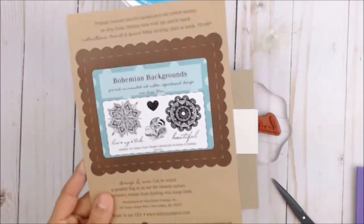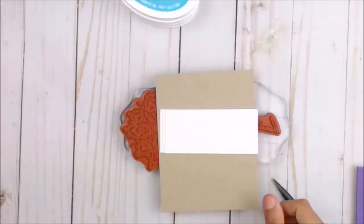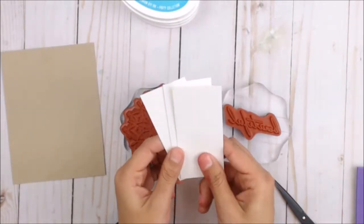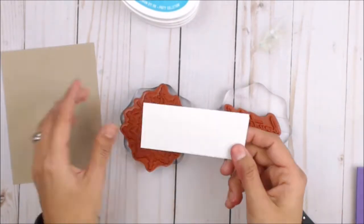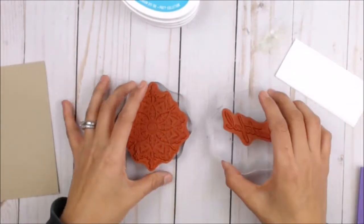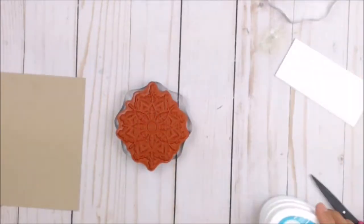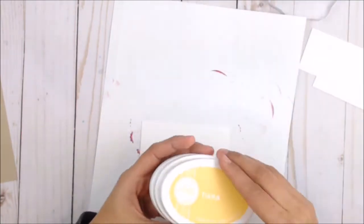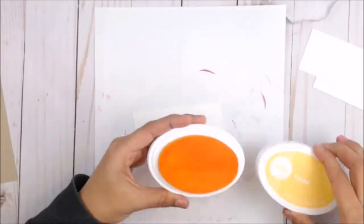To begin, I'm going to be using the Bohemian Background stamp set, Crumb Cake cardstock, three pieces of white cardstock that have been cut to fit at 1.75 inch intervals, and my ink colors.